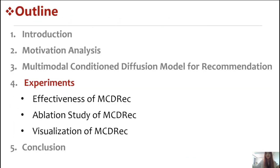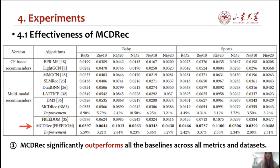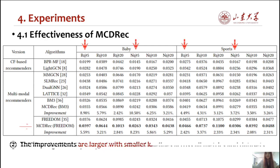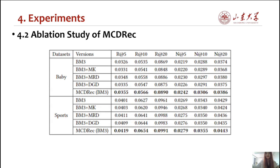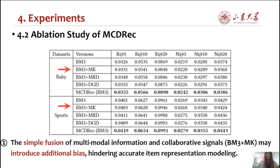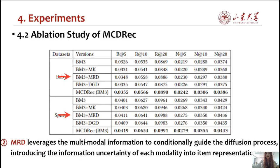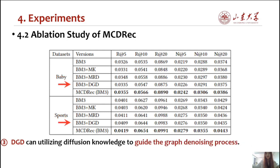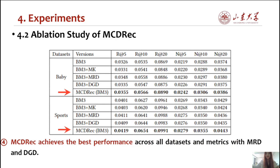The next section is the experiments. We compare MCDRec with eight recommenders. We can observe that MCDRec significantly outperforms all the baselines across all metrics and datasets. The improvements are larger with smaller k. We also conduct ablation studies and notice that simple fusion may introduce additional bias. MRD leverages the multimodal information to conditionally guide the diffusion, introducing the uncertainty of each modality. DGD can utilize diffusion knowledge to guide the graph denoising process. MCDRec achieves the best performance across all datasets and metrics with MRD and DGD.